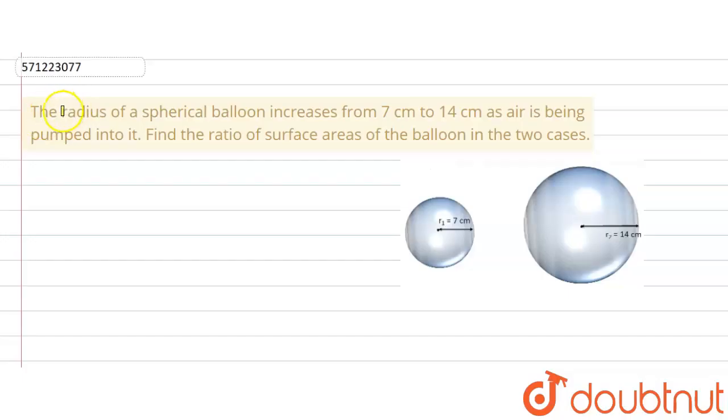The given question says that the radius of a spherical balloon increases from 7 cm to 14 cm as air is being pumped into it. Find the ratio of surface areas of the balloon in the two cases.